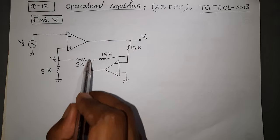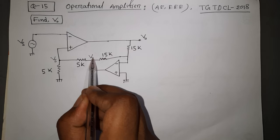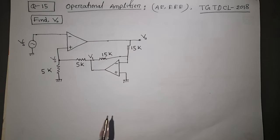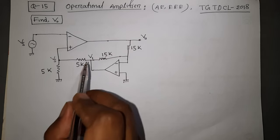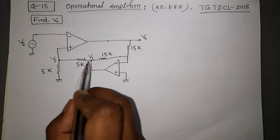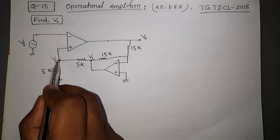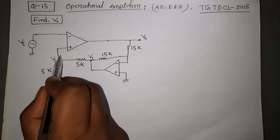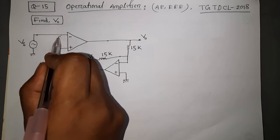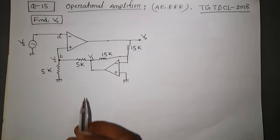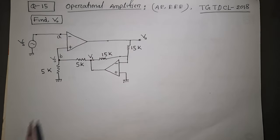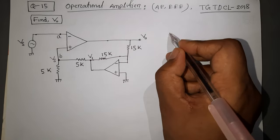The output voltage is V1. The terminal is V1. Now the terminal is V2. The terminal is V1 and V2. The terminal is V2.